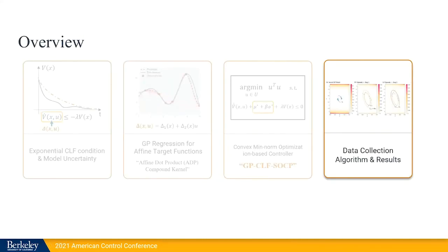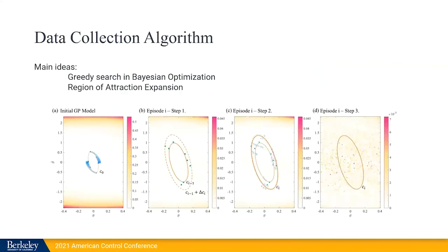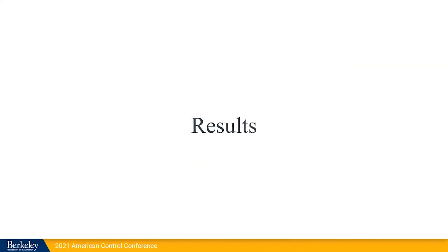Now I'm going to present our data collection algorithm and the results. So our data collection algorithm is in an episodic learning fashion. And it takes as main idea the greedy search of the Bayesian optimization literature. And what it tries to do is get better and better estimates of our uncertainty in order to reduce the conservatism of our controller. So basically reduce the uncertainty of our GP model. And then that way we can get larger and larger regions of attraction of the controller. For more details, please check our paper.